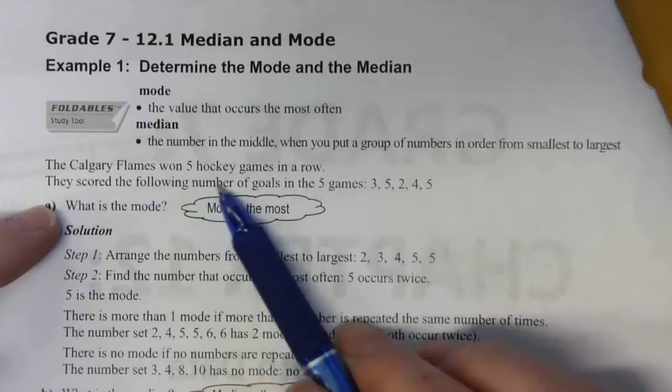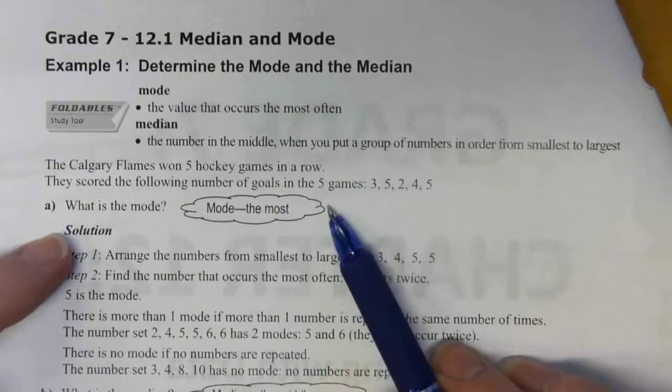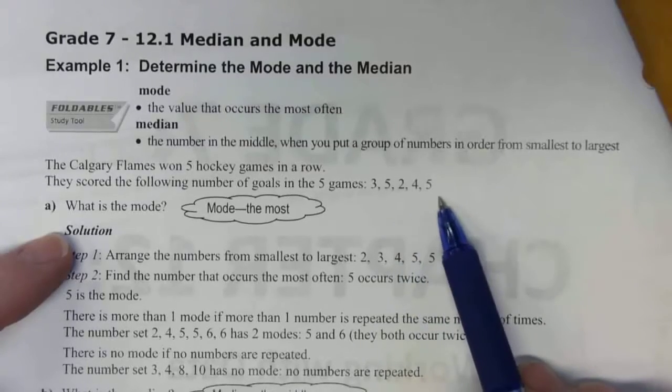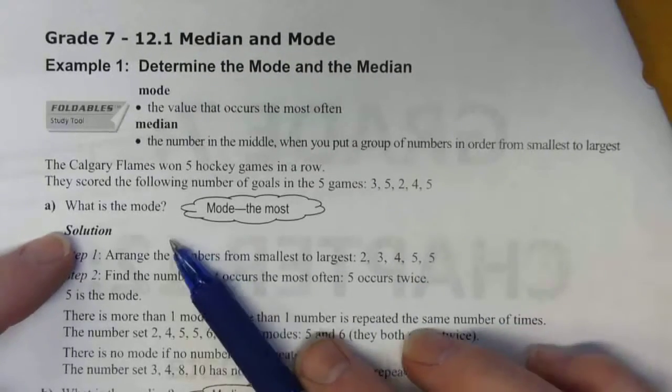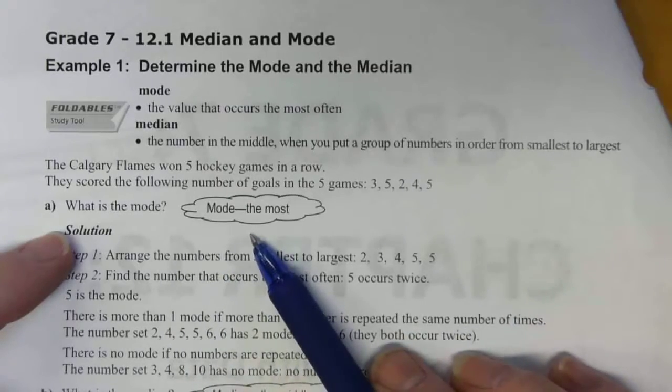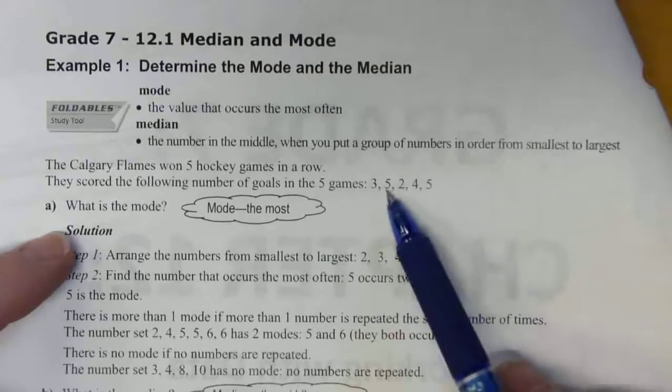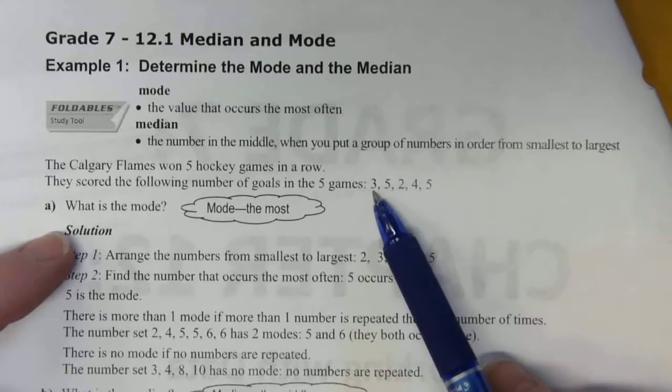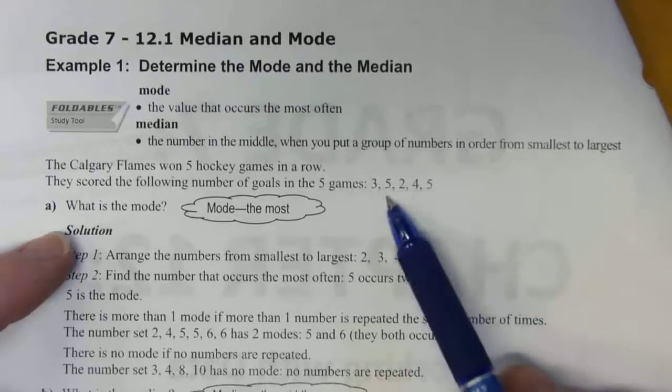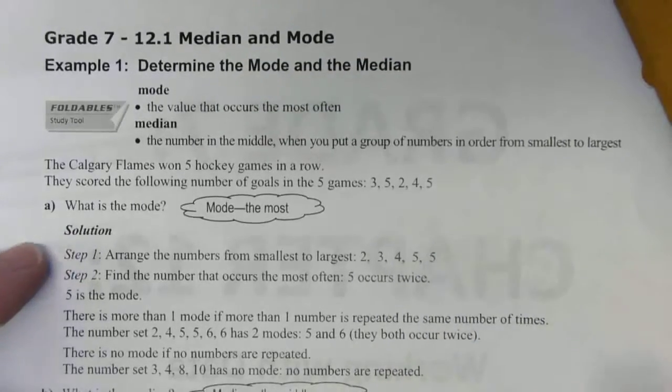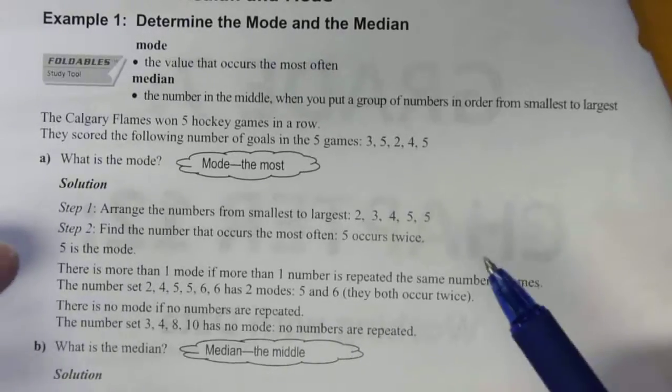For instance, the Calgary Flames won five hockey games in a row. They scored the following number of goals in the five games: 3, 5, 2, 4, and 5. The question is, what is the mode? The mode, we said, was the most. You'll see here that there's only one game where there was three, only one where there was two, only one where there was four. But there were two games where they scored five goals. So that's it at a quick glance.